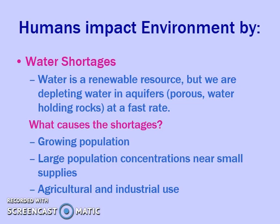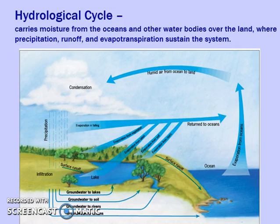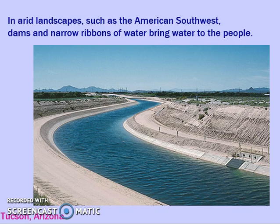We have a growing population that needs more water, and we're industrializing more. These agricultural and industrial uses are using up our water very rapidly. In turn, we have conflicts that result from it — wars on the international scale, and droughts and legal issues that arise between neighboring states.